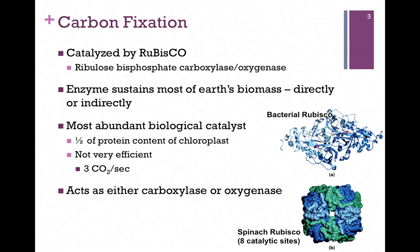Phase 1, carbon fixation, is catalyzed by the enzyme RUBISCO, which stands for ribulose bisphosphate carboxylase oxygenase — a rather involved name. As we'll see, the name tells us what it does, which is why we use the acronym. It's an enzyme that sustains most of the Earth's biomass, either directly or indirectly — quite an impressive enzyme. It is the most abundant biological catalyst, accounting for about half of the entire protein content of a chloroplast.